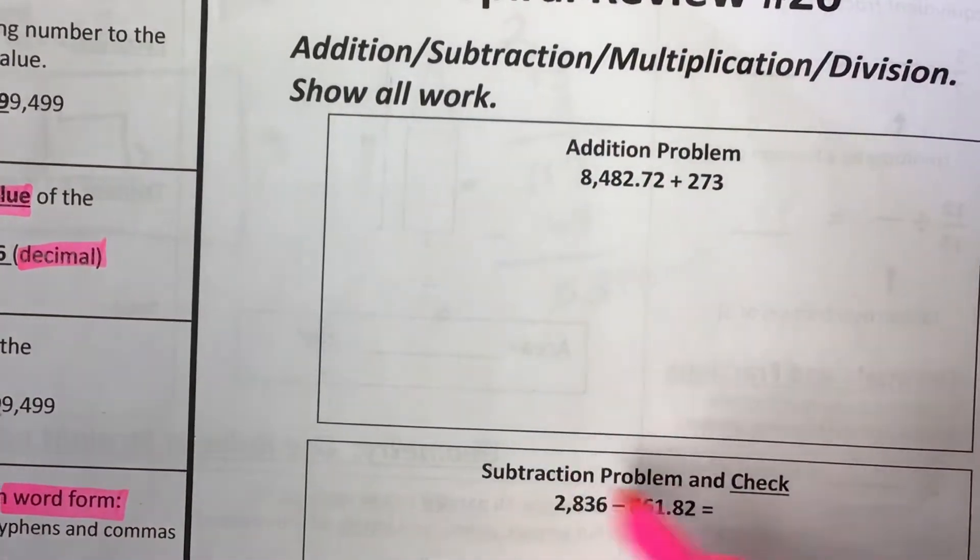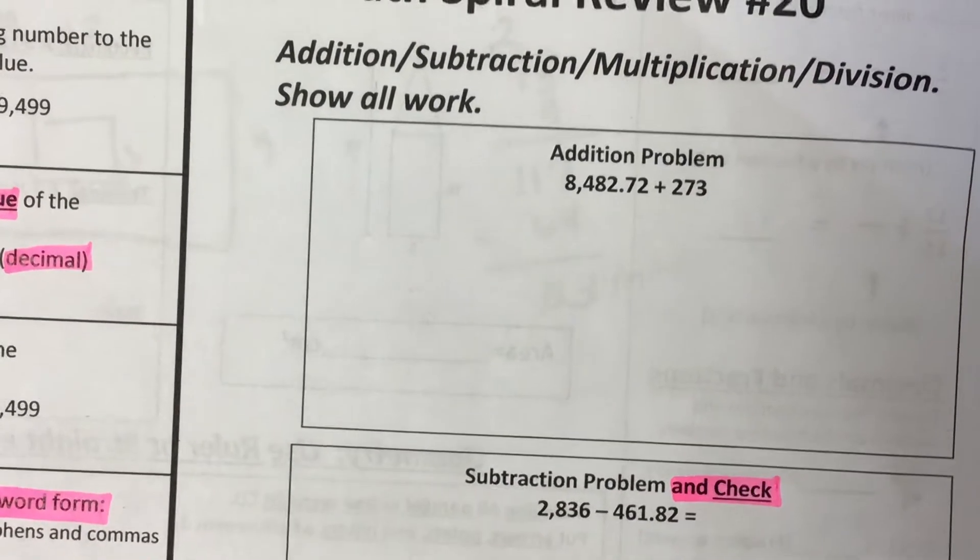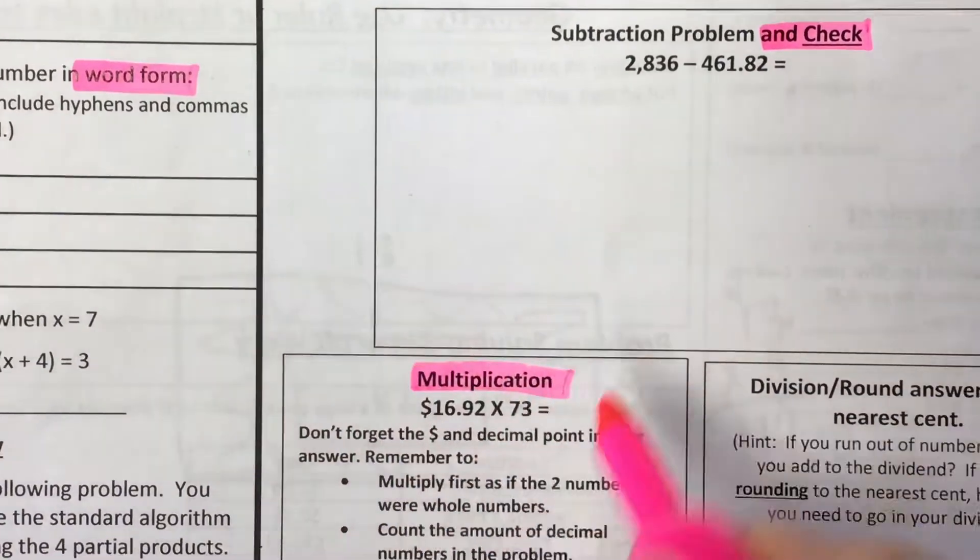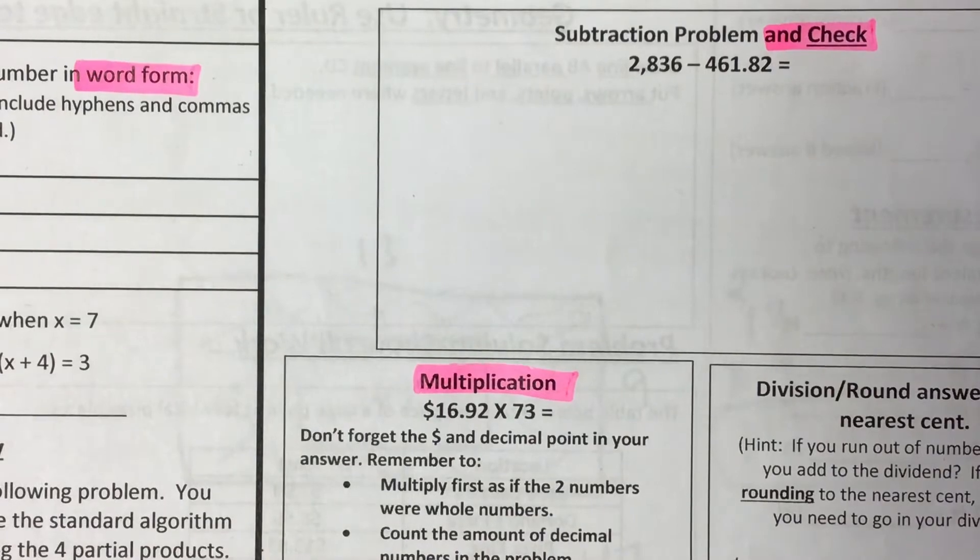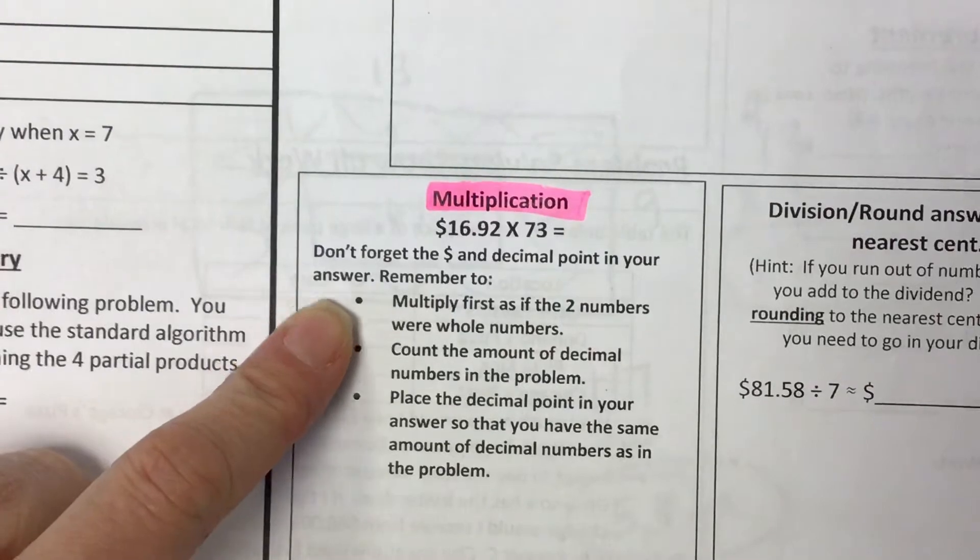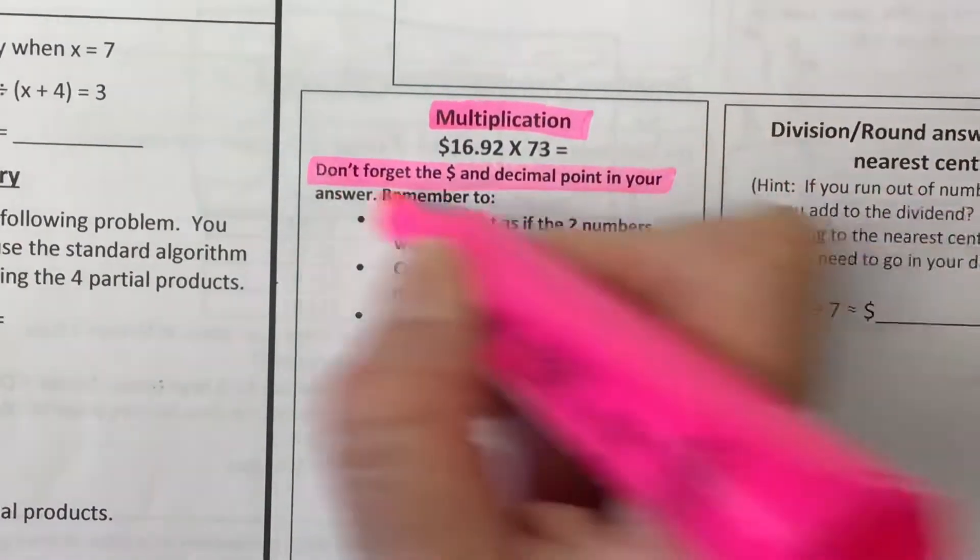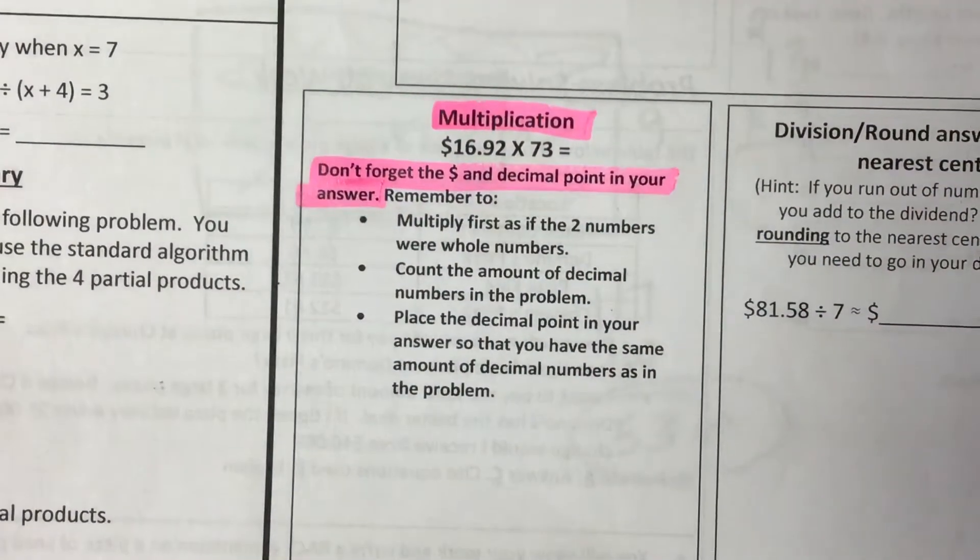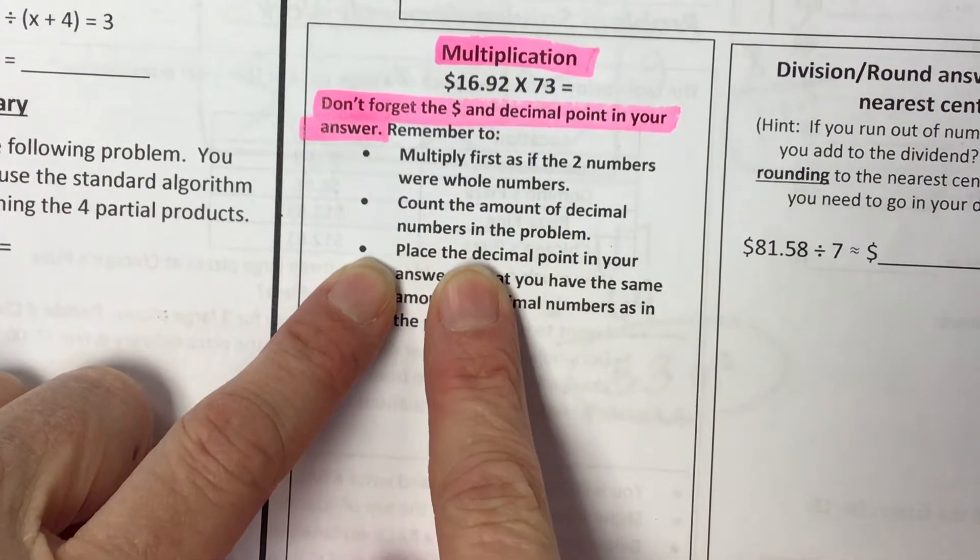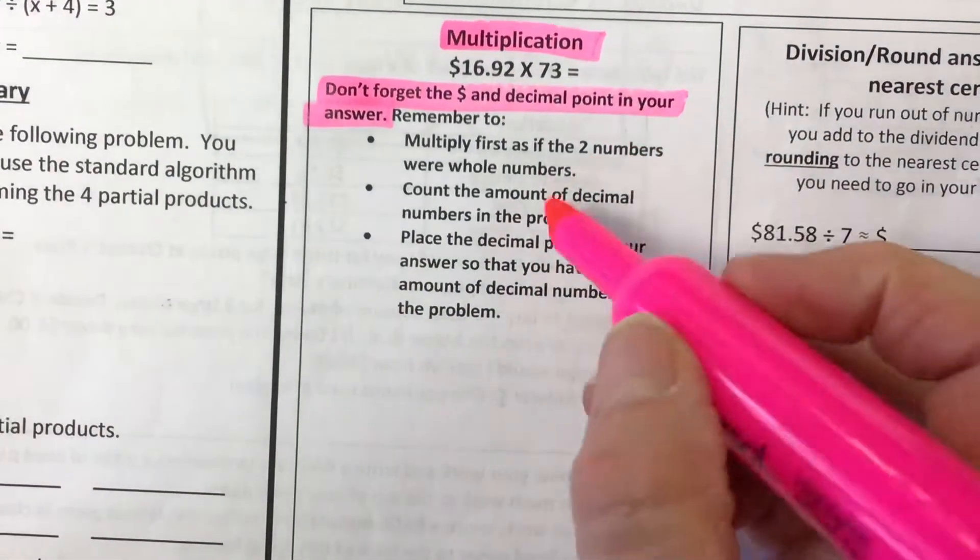Addition. This one is subtracting and check. I took multiple points off last week's spiral because people did not add back to check. Multiplying, okay, and there's a decimal, and look at that, four digits by two digits. Don't forget the dollar sign and decimal point in your answer. Remember to multiply first as if the two numbers were whole numbers. Count the amount of decimal numbers in the problem. Place the decimal point in your answer so that you have the same amount of decimal numbers in the problem.